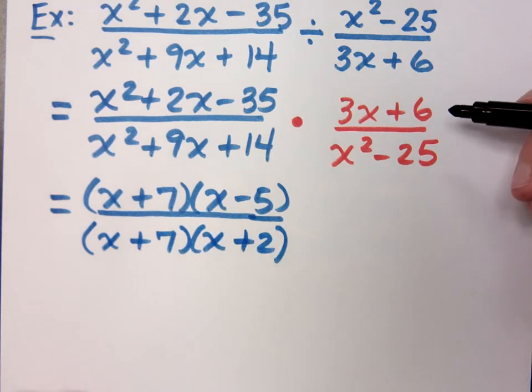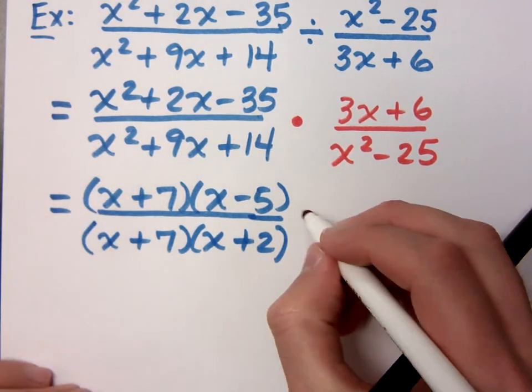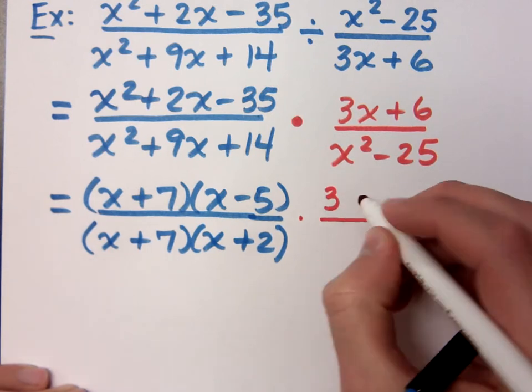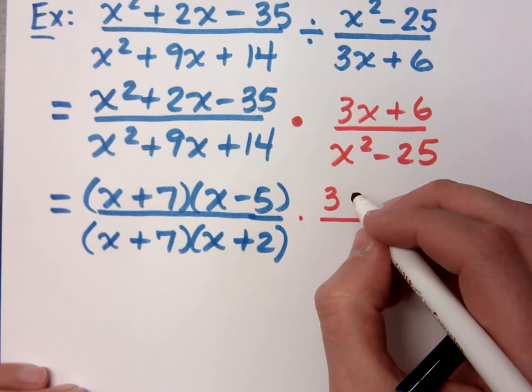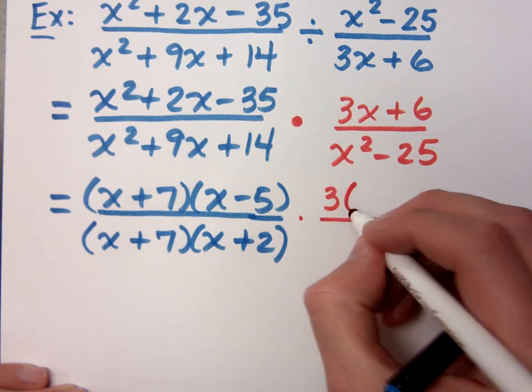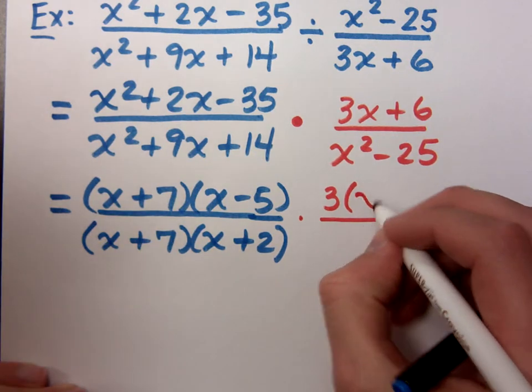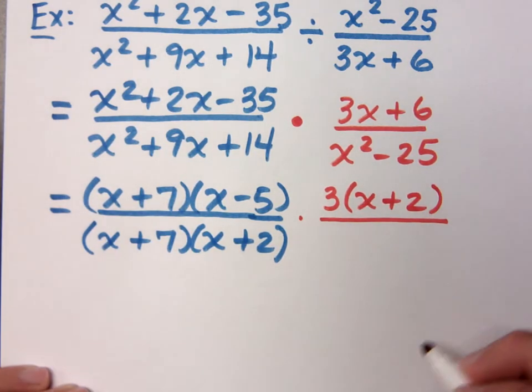Some of you look at 3X plus 6, and you go... That's exactly what I did. Yeah, I know that's what you did. But what's the first thing you do when you factor? You've got to factor out what? Greatest common factor. That's a good word. Greatest common factor. So my GCF is going to be a 3. And can you tell me, inside the parentheses, will be? X plus 2. Man, you're right. That's X plus 2.